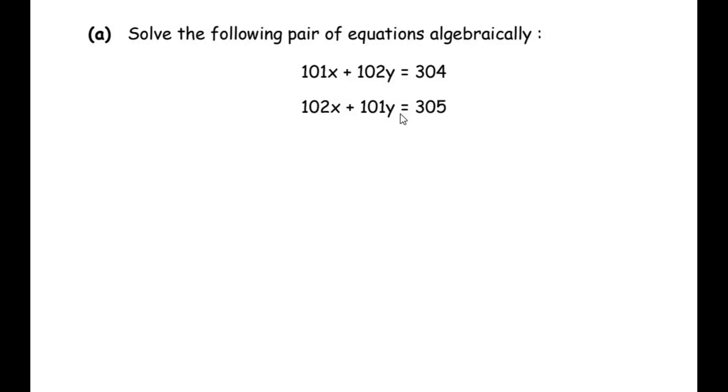In the first equation we have 101x, and in the second equation we have 101y. Similarly, in the first equation we have 102y, and in the second equation we have 102x. Since we see some kind of relationship, let us try adding them together and subtracting them together.